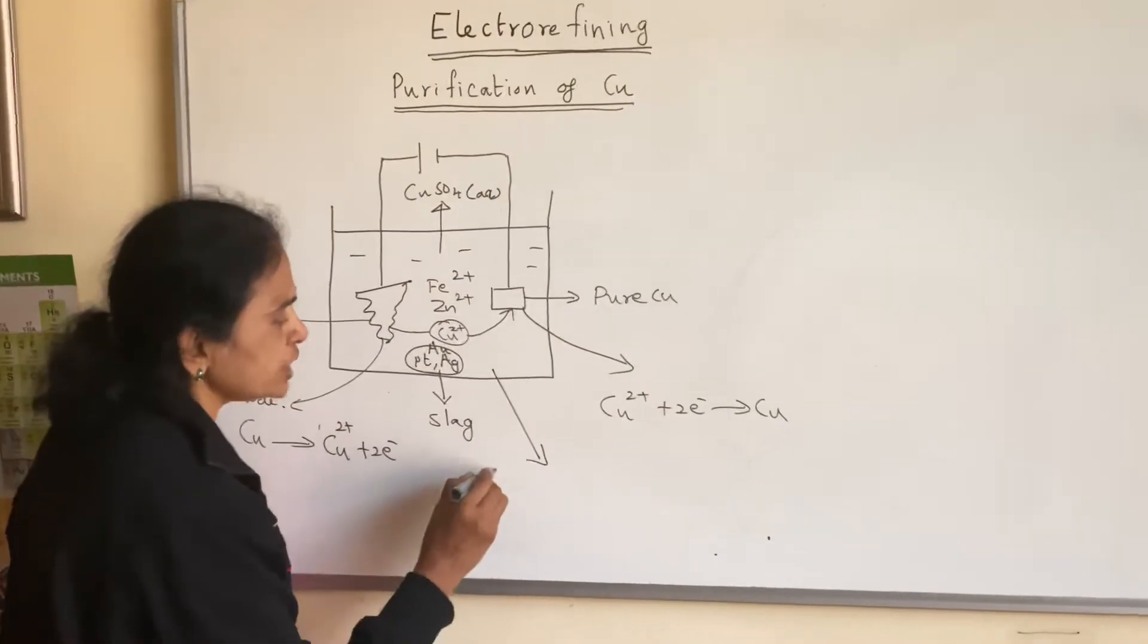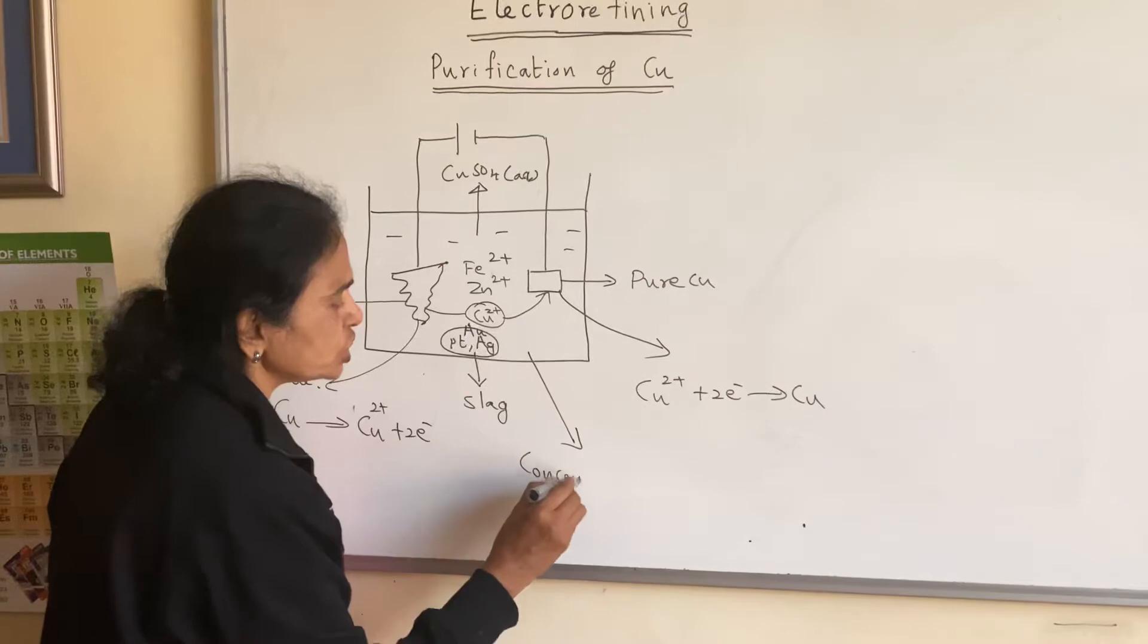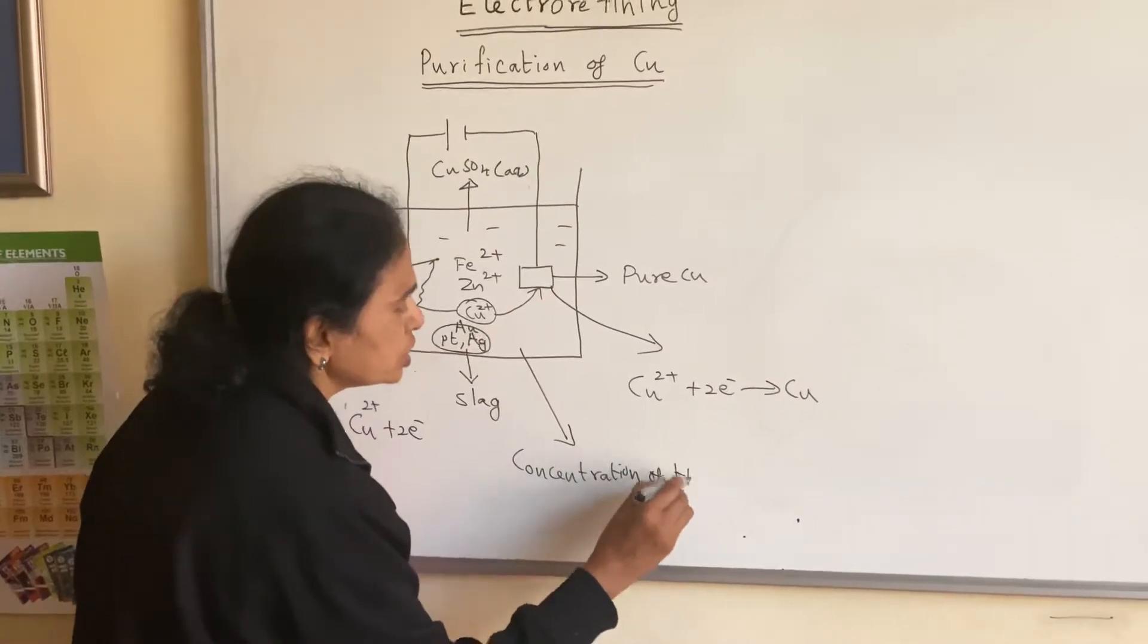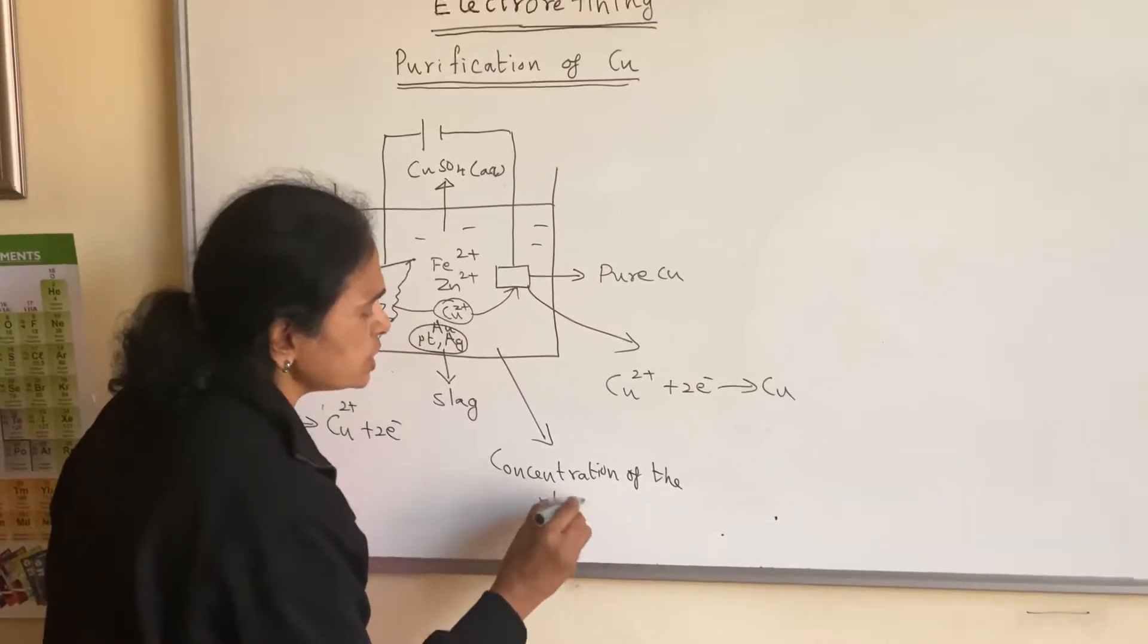So the concentration of the electrolyte does not change. The concentration of the electrolyte remains constant. So this is how we get the pure copper from the impure copper.